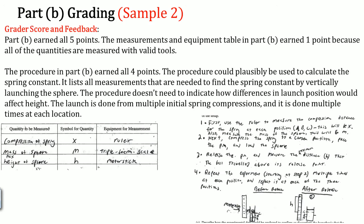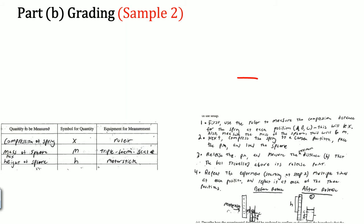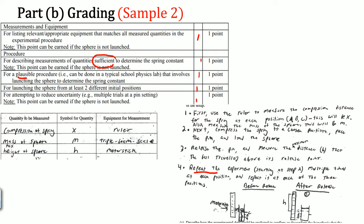The grader says sample two earns all five points. The equipment is correct with valid tools. The procedure earns all four points because it is possible and well-described. The procedure does not need to indicate how different launch positions affect height — that is acceptable. They also repeated the experiment, so they earn the final point.